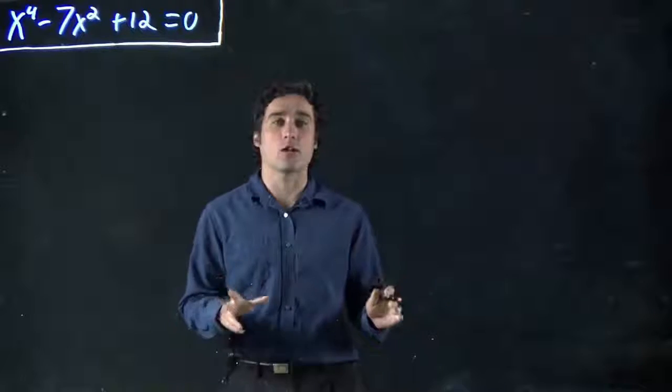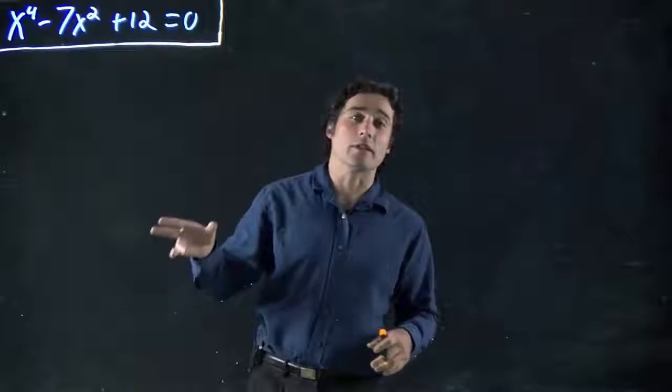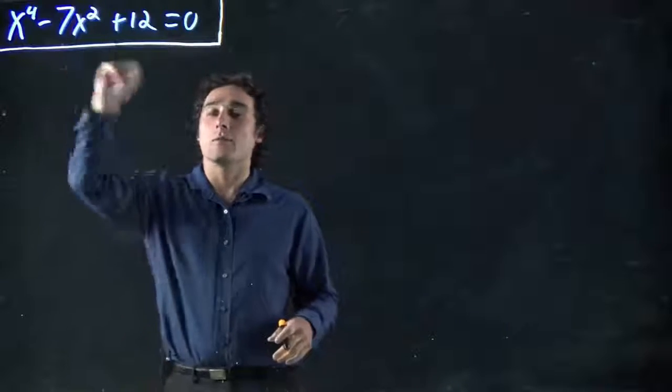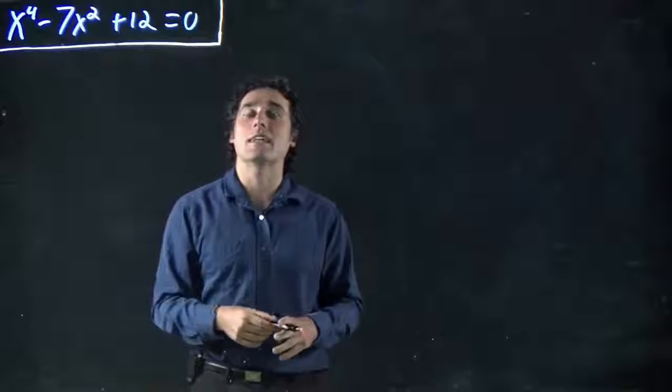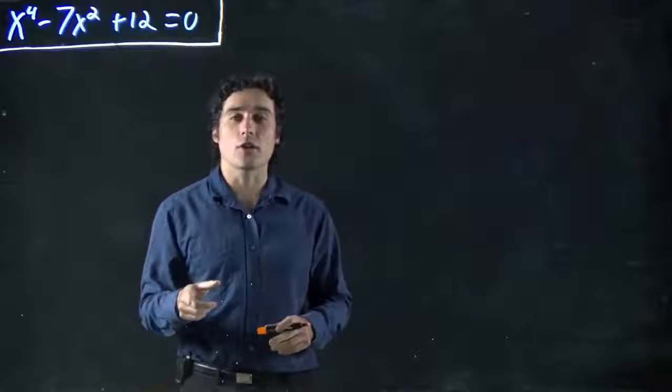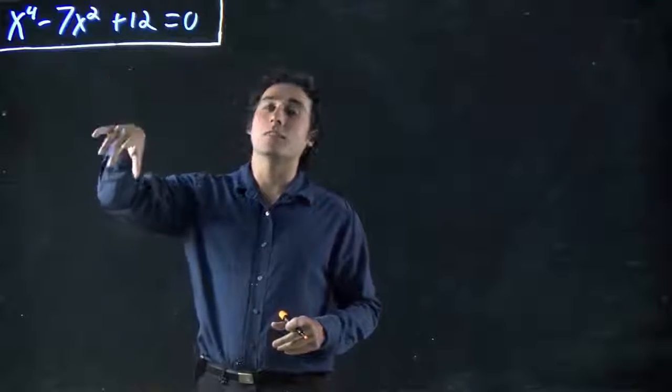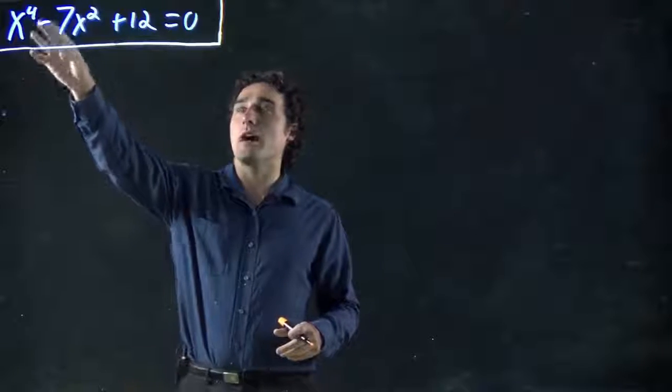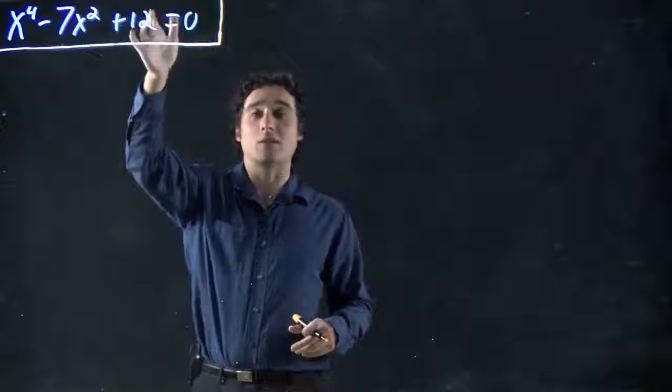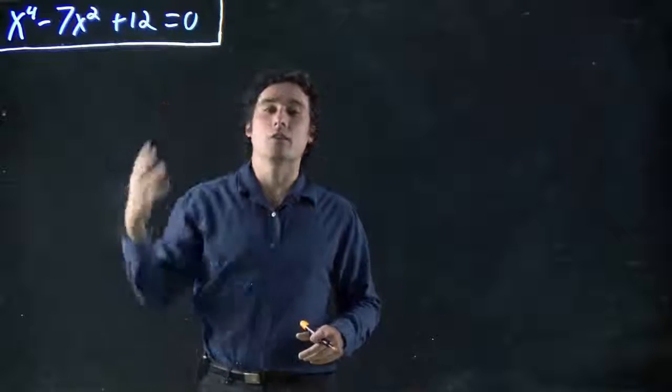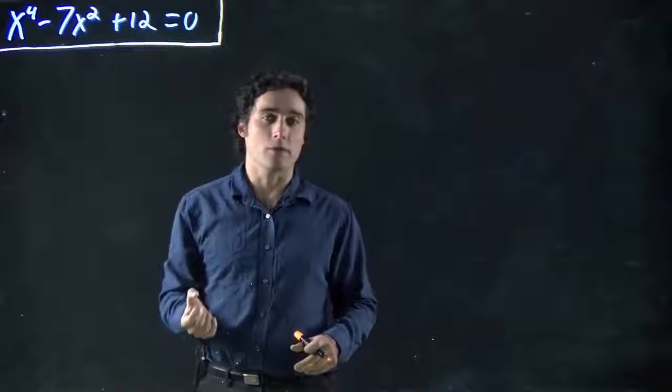Alright, we're looking at our last quadratic case, and this one looks weird. We've got a power of 4, a power of 2, things look a little more dicey than what we've been doing, but I'm going to show you how to do it. This can still be done, any kind of problem where you have the one power that's double the next one, and then the last one doesn't have any power at all, you can make it into a quadratic that we're familiar with.